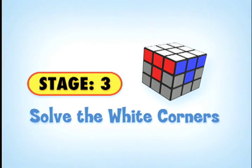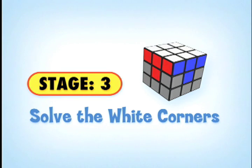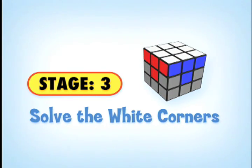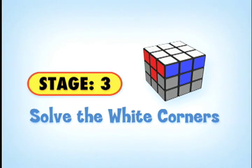Now that you've solved the white cross, our goal is to solve the white corner pieces. So let's get to it. Remember, those are the pieces located on the corners, and they have three colors.